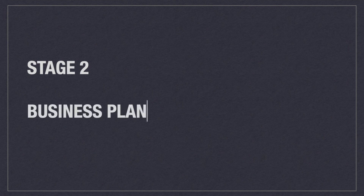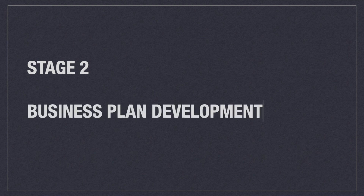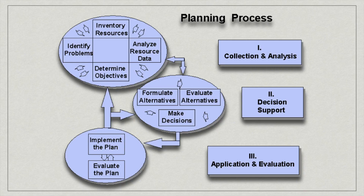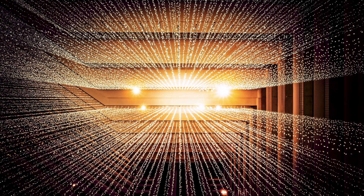Stage 2: Develop a business plan. It is planning — one of the foremost functions of management. In simple terms, a description of the future. No one can exactly tell what's in the future, except in fantasy novels and movies, but imagine if we can formulate the future of our business.